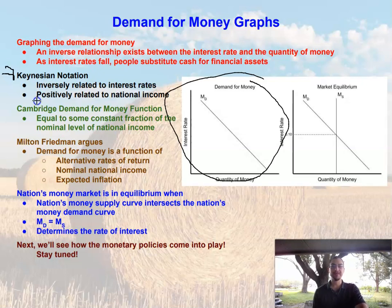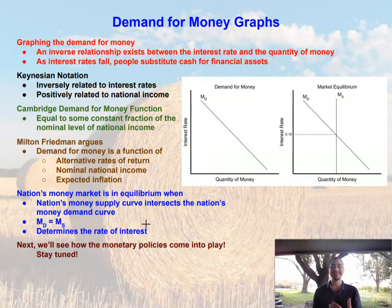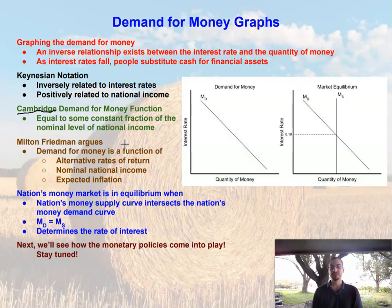So with Keynesian notation, the demand for money is inversely related to interest rates but also positively related to national income — as national income goes up, people demand and hold more cash. That formula we discussed is the Keynesian notation. We also have some differing opinions, like the Cambridge demand for money function, which holds that demand for money equals some constant fraction of the nominal level of national income.